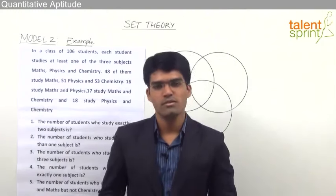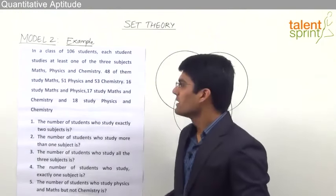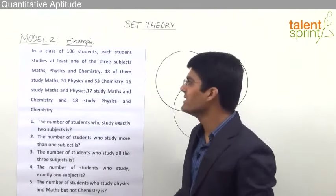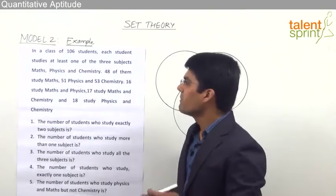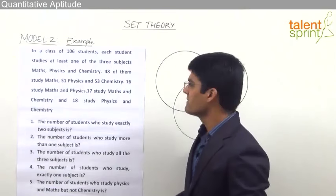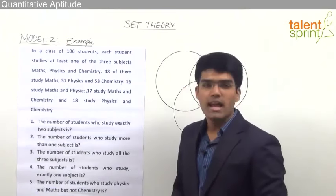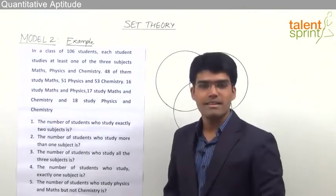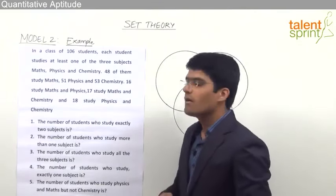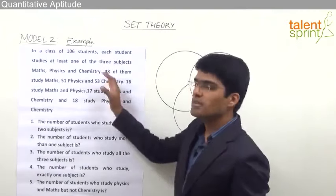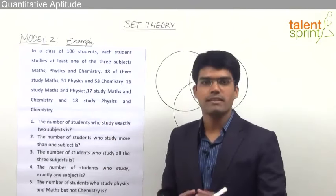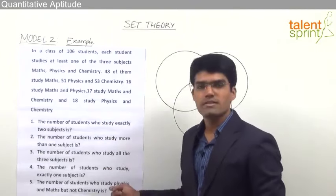Let us now take an example from Model 2 of Set Theory. The question given here is: in a class of 106 students, each student studies at least one of the three subjects — Maths, Physics and Chemistry. 48 of them study Maths, 51 study Physics and 53 Chemistry. 16 study Maths and Physics, 17 study Maths and Chemistry, and 18 study Physics and Chemistry. This is the information given to us, followed by 5 questions, each carrying one mark — altogether a 5 marks question.